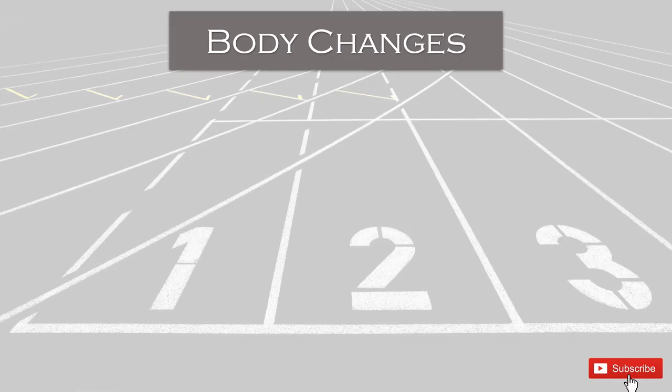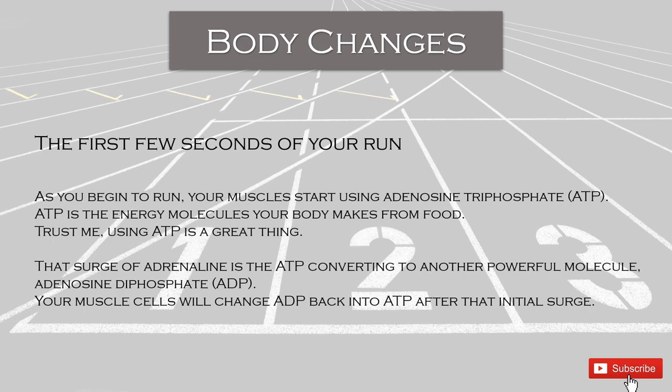What most people would like to know is what changes are happening in their body while they're running. In the first few seconds of your run, your muscles start using adenosine triphosphate, or ATP — the energy molecules your body makes from food. Using ATP is a great thing because this is how you burn calories. ATP converts to another molecule, adenosine diphosphate or ADP, and your muscle cells then convert ADP back into ATP after the initial surge.